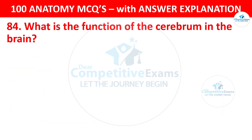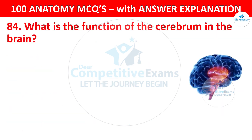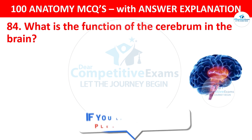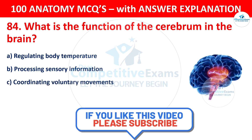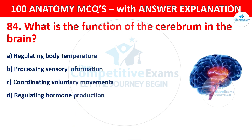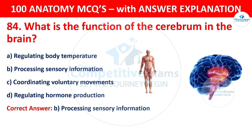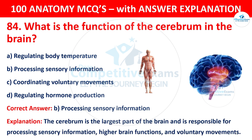Question number 84: What is the function of the cerebrum in the brain? The options are: Regulating body temperature; Processing sensory information; Coordinating voluntary movements; or Regulating hormone production. The correct answer is B — processing sensory information. The cerebrum is the largest part of the brain and is responsible for processing sensory information, higher brain functions, and voluntary movements.